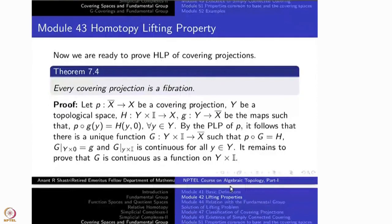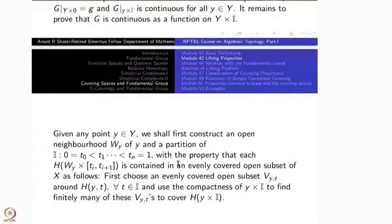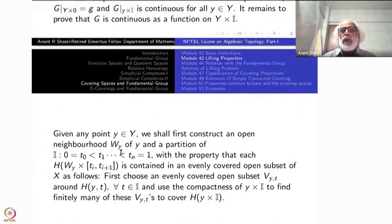Given any point in Y, we shall first construct an open neighborhood W_i of y such that the idea is, suppose you prove a neighborhood open y such that G restricted to W_i cross I is continuous. Then you are done because continuity is after all a local property. For each neighborhood, if it is true, then you are done. So I am finding a neighborhood W_i of y such that there is a partition t_0, t_1, up to t_n equal to 1.